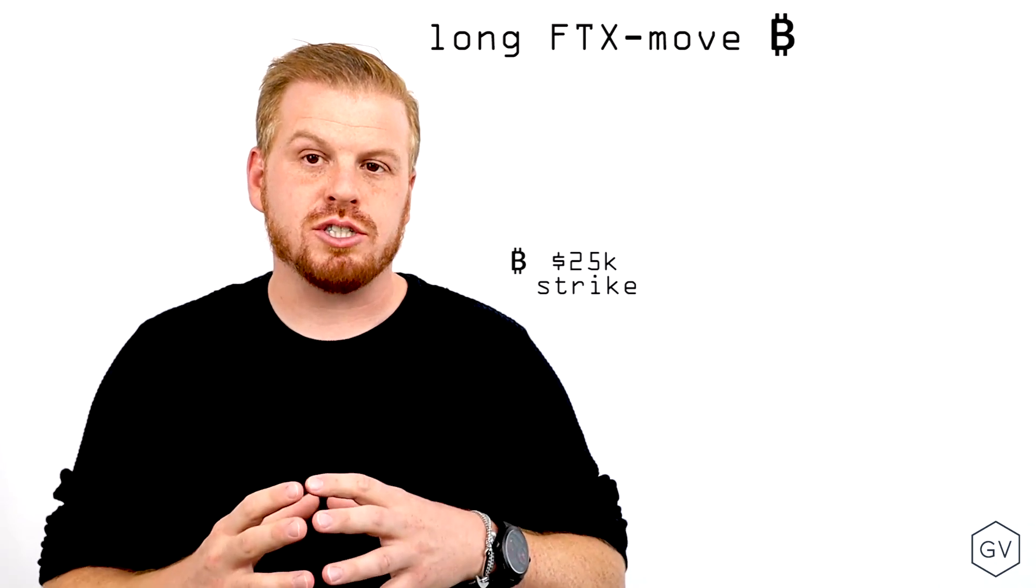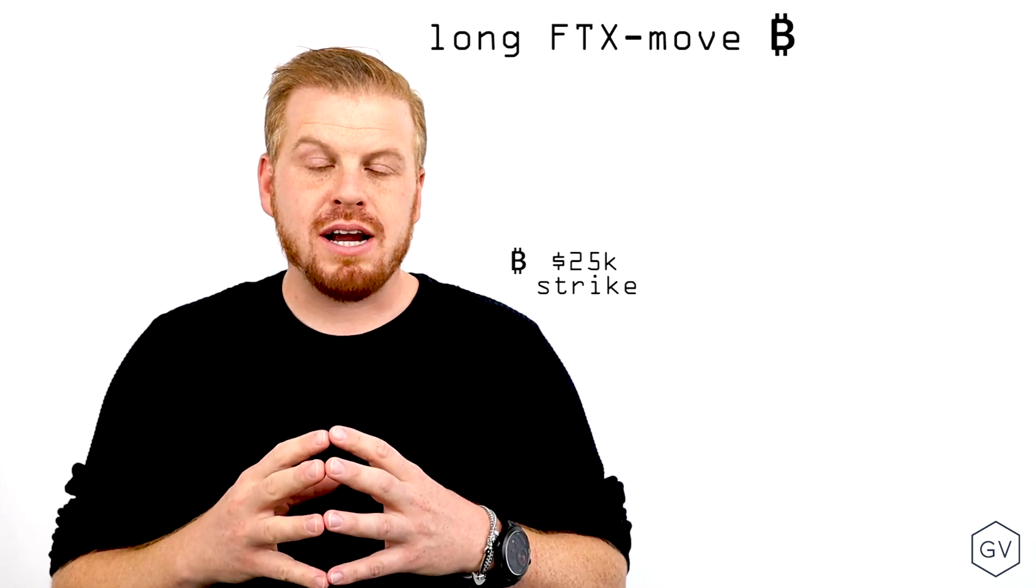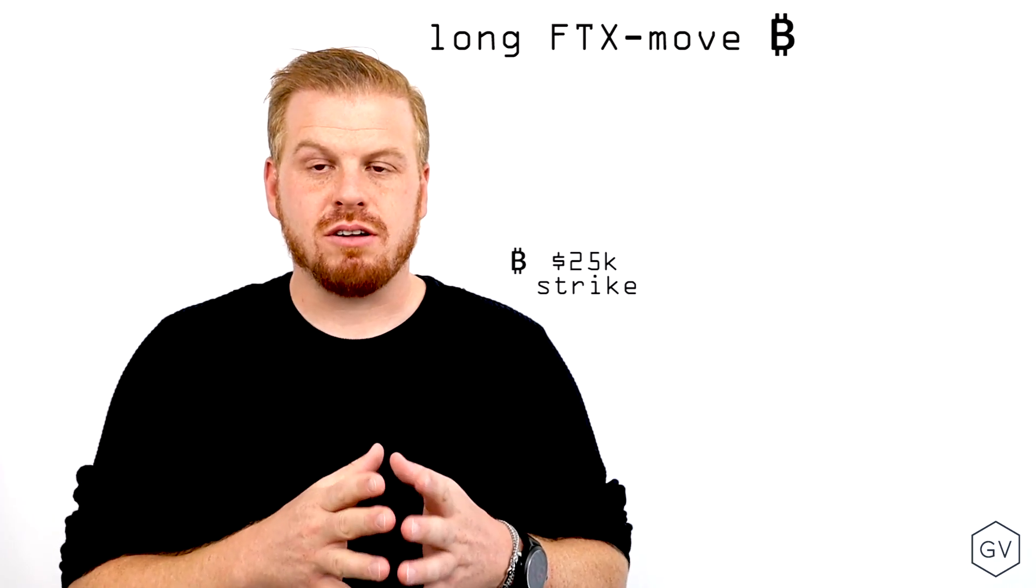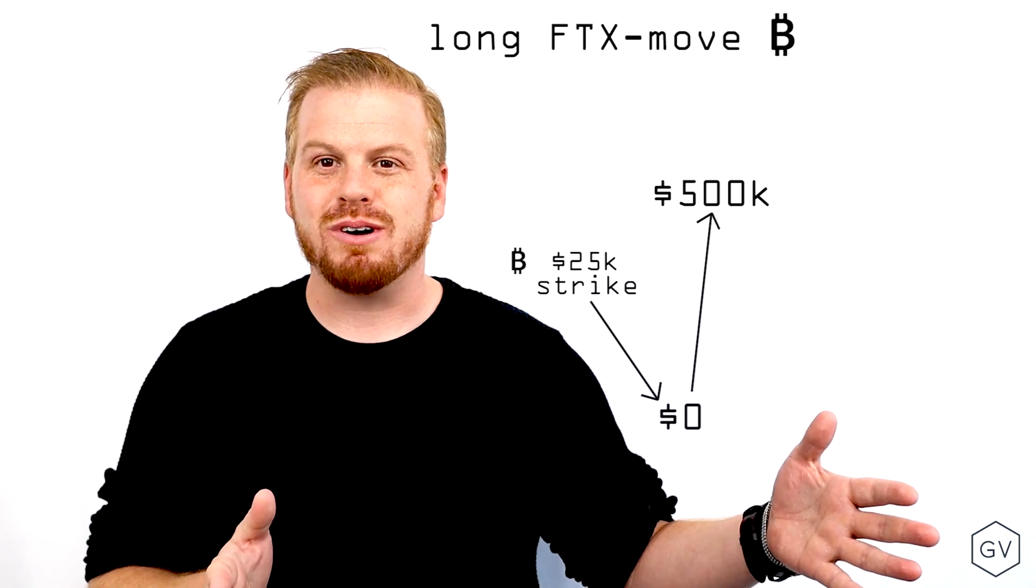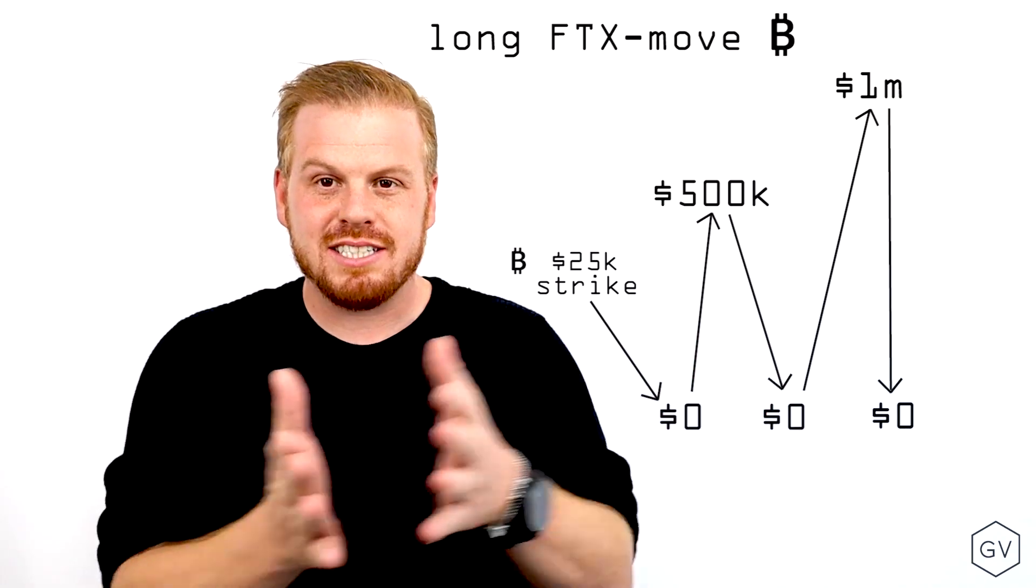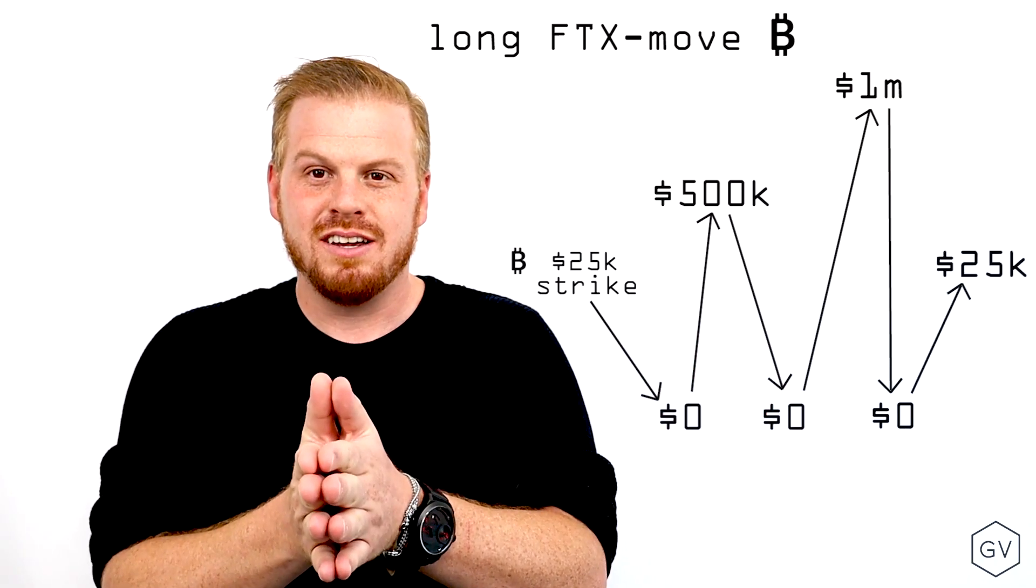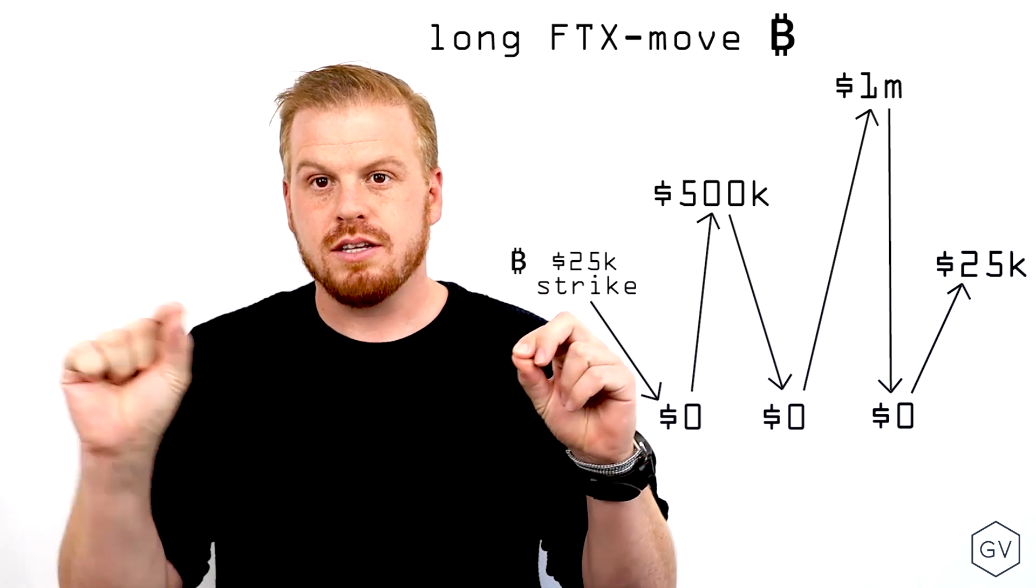Well, using an unhedged move contract that you hold until the end of the week, if the price of Bitcoin went from $25,000 today to zero tomorrow, to $500,000 on Wednesday, back to zero on Thursday, back to a million dollars, back to zero, and then settled finally at $25,000,